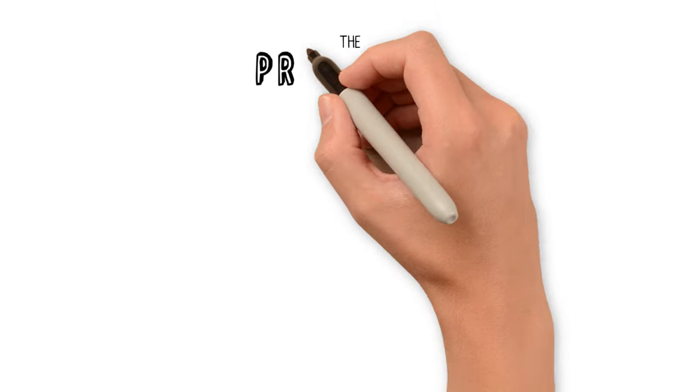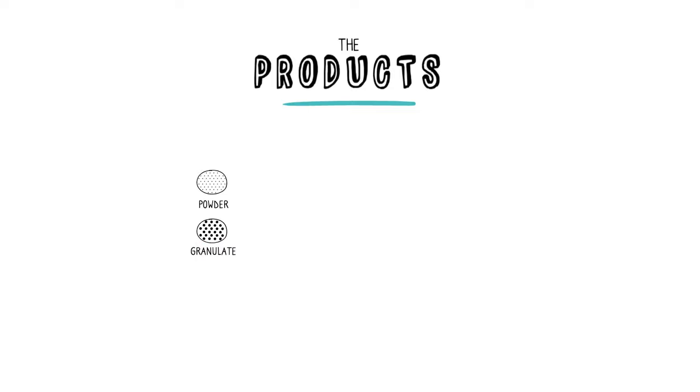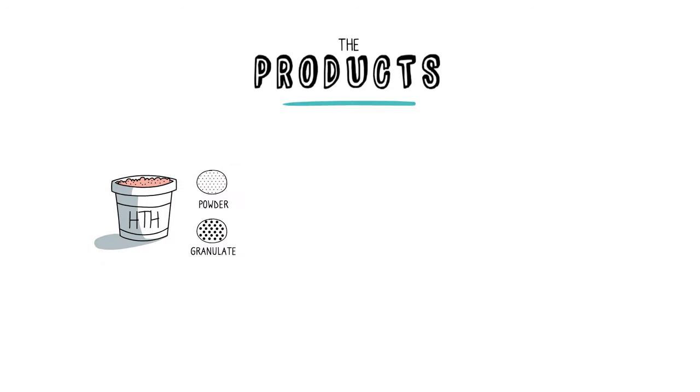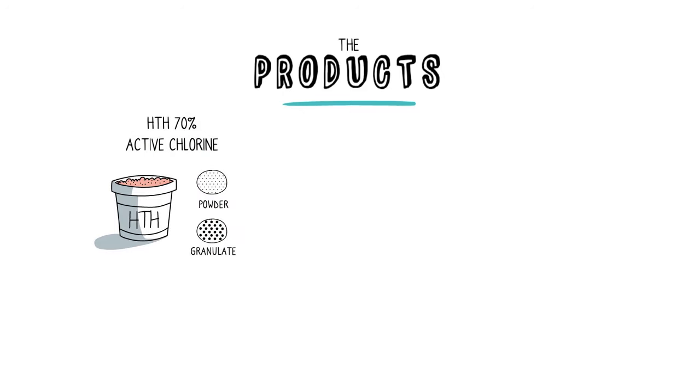And the products, you can either use powder or granular chlorine such as calcium hypochlorite, also called high-test hypochlorite, HTH, ideally with a concentration of 70% of active chlorine.